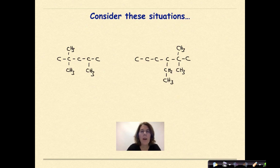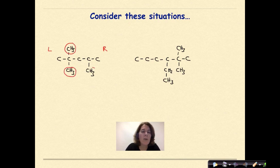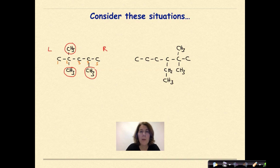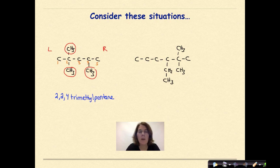Looking at the compound on the left, we need to start numbering from left to right because we have more branches closer to the left side. Carbon 1, 2, 3, 4, 5 — so we have pentane. We have three methyl groups, so the full name is 2,2,4-trimethylpentane: tri- because there are three methyl groups, and pentane because there are five carbons in the parent chain with all single bonds.